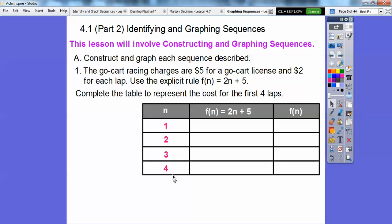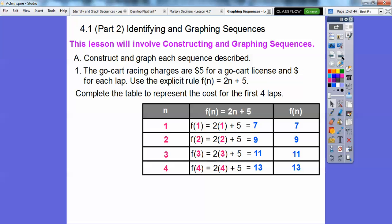Remember those numbers? It started with 7 because it was 1 lap times $2 for each lap plus the $5. For 2 laps, it's 2 times $2 plus the $5. So we're just going to plug those numbers in. So 2 times 1 is 2 plus 5 is 7, so this gets a 7. And then when we plug in the other one, we get 9. When we plug in the next one, we get 11. And then we finally get 13.